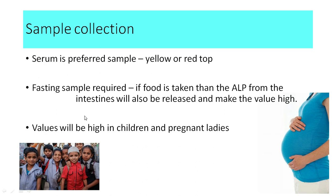Alkaline phosphatase is present in the bones, so in children, where bones are being formed and modified quite a bit, the alkaline phosphatase levels will be high. Also, in pregnant ladies, because alkaline phosphatase is present in the placenta, the levels can be high. We should know whether the patient is a child or a pregnant lady when interpreting results. The sample to be used is serum, collected in the fasting state.